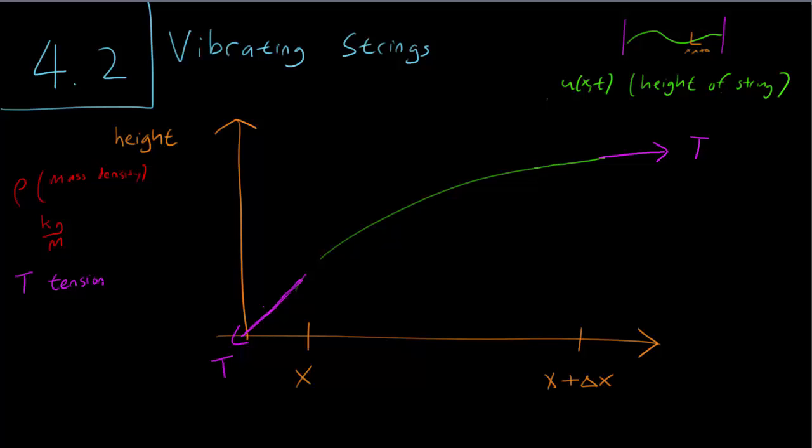For our purposes, we're going to assume that the tension is the same everywhere, so the arrows are of the same length. We have tension pulling in both ends, and they're pulling in at a certain angle, the angle of the string.